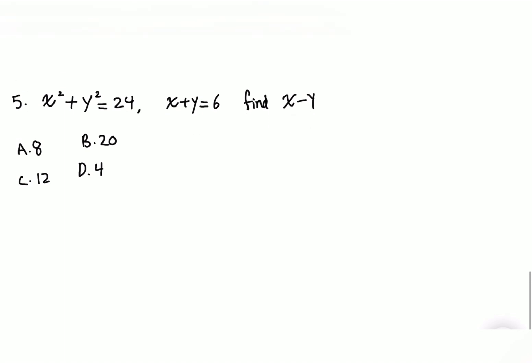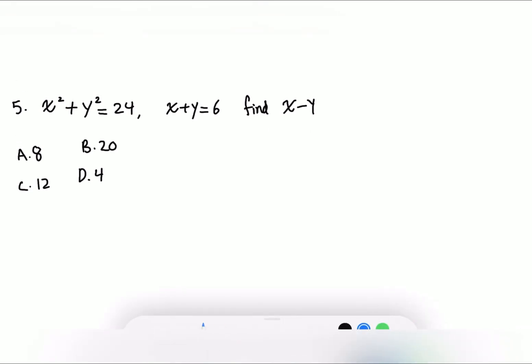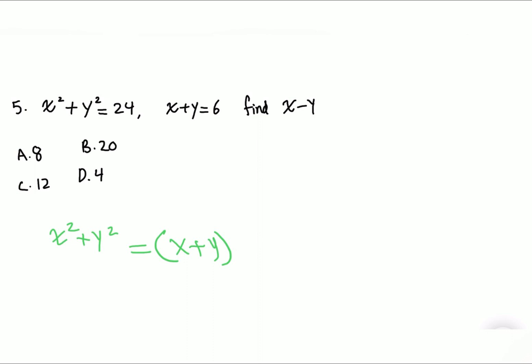This is the fifth and final problem. Given that x² + y² = 24 and x + y = 6, find x − y. The key rule to know is that x² + y² = (x + y)(x − y).